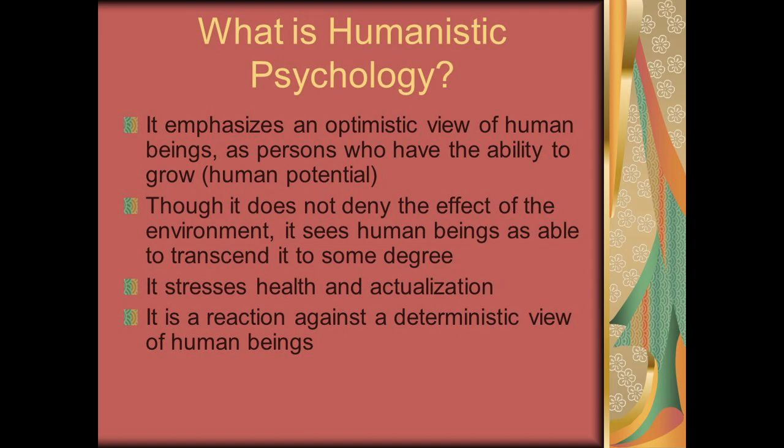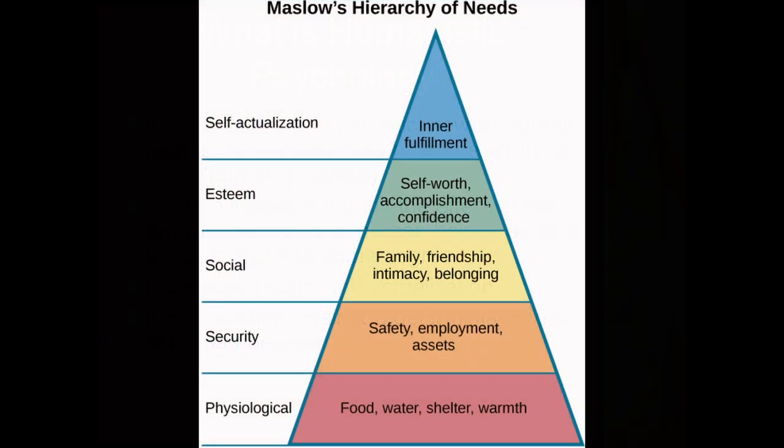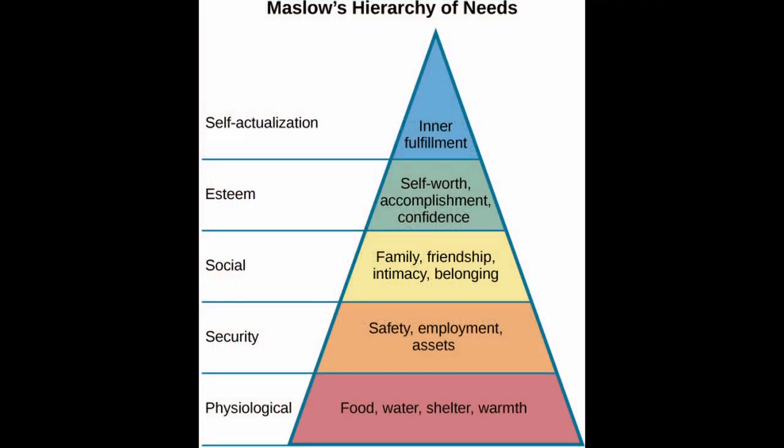Humanism is the perspective that focuses on the potential of good within humanity. Two of the most well-known humanists are Maslow and Rogers. Starting with Maslow, he was an American psychologist best known for creating the pyramid of needs, this being a belief that in order to reach inner fulfillment, one must have all of their prior needs met.